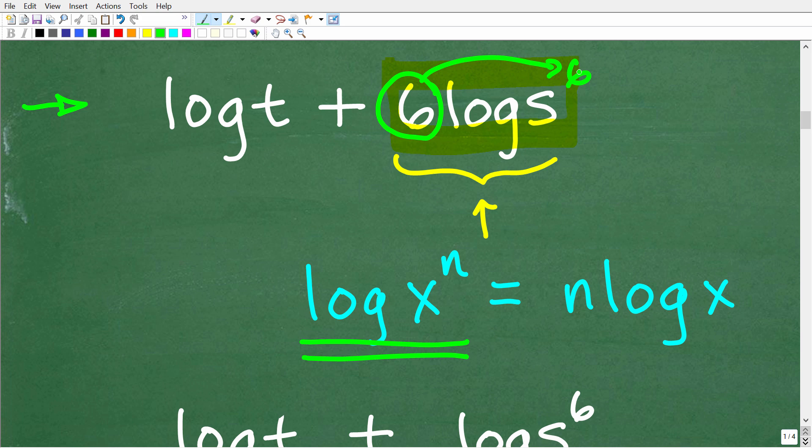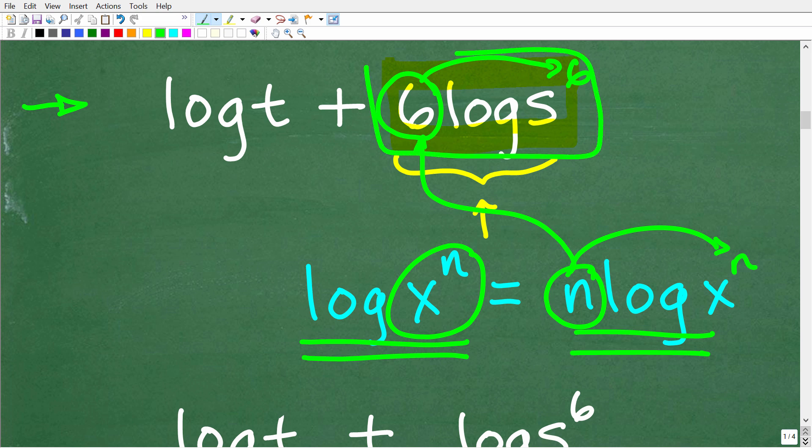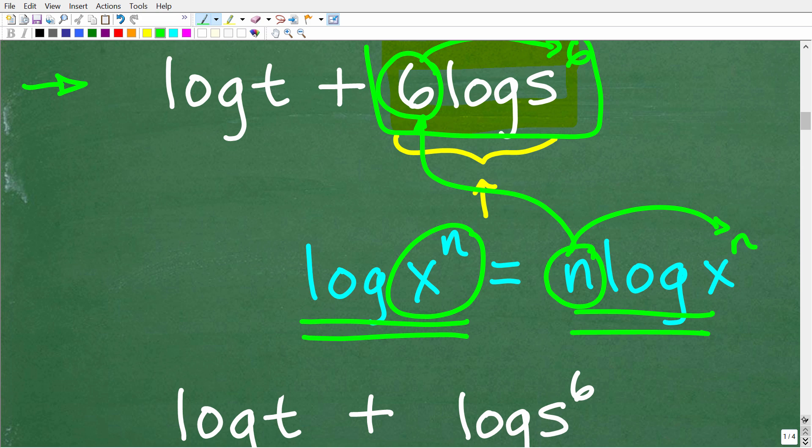So that is going to be our first step. And the reason why we can do that is this property here. So we have n log x. This is equal to log x to the n. So this n right here is the same thing as this 6 or in the same position. So we can move that up here as x to the n or in this case s to the 6 power. All right, so we're going to clean this up before we start thinking about the product property, which is going to be our next move.